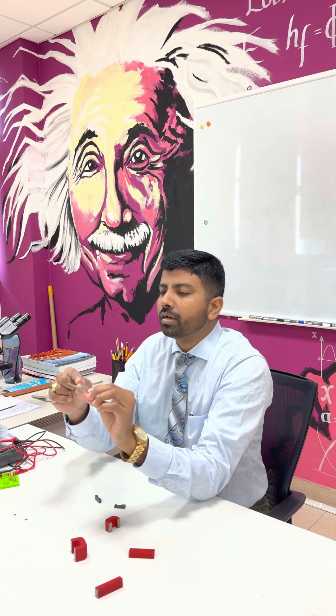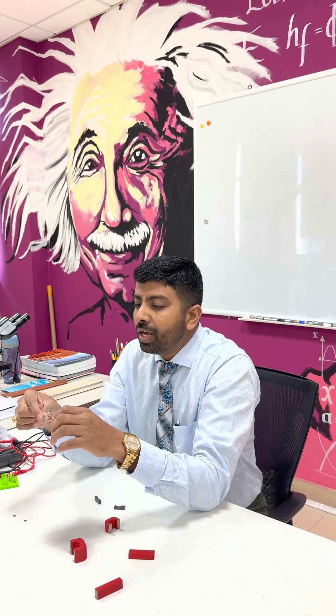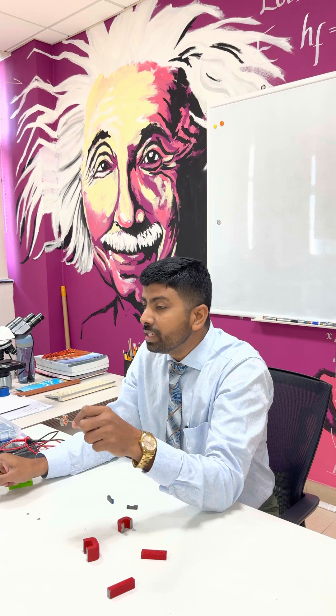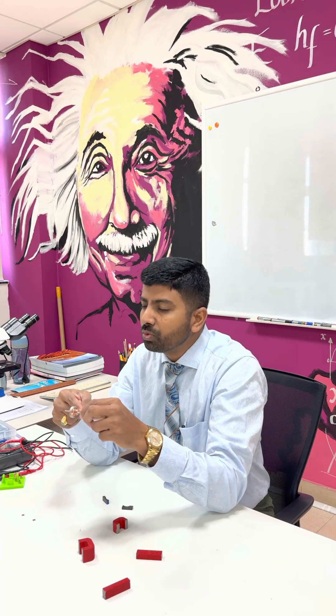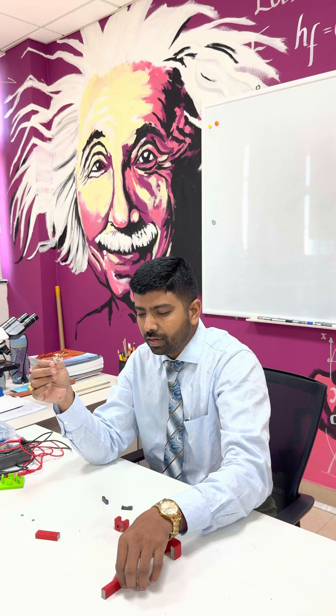This is a coil. You can see many copper wires are wounded. So now what I will do, I will allow the electric current to pass through this and I will be using DC current. Now the current will pass through the coil. When the current passes through the coil, I will keep this in a magnetic field.